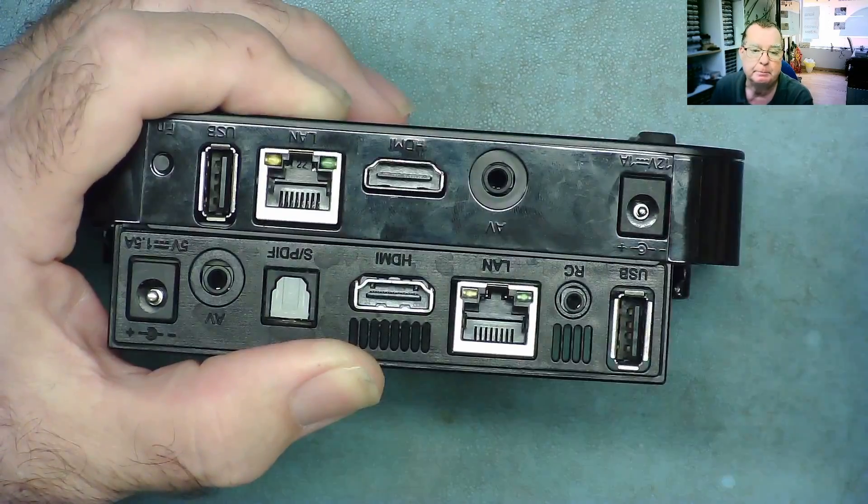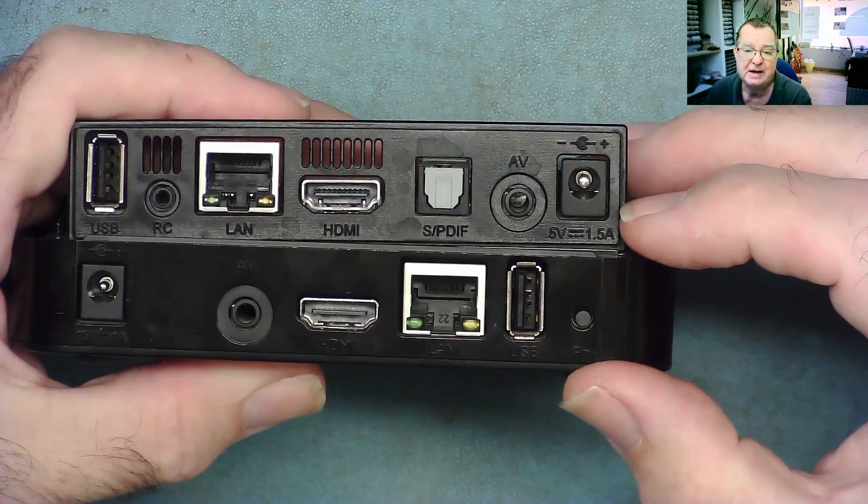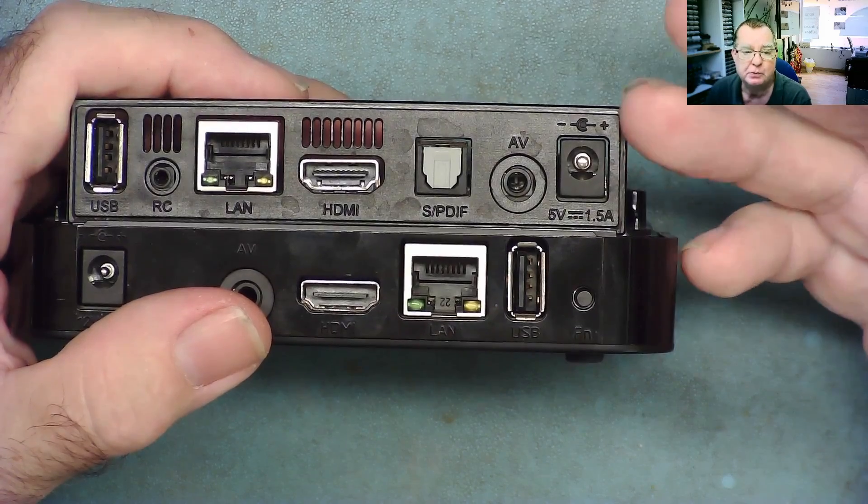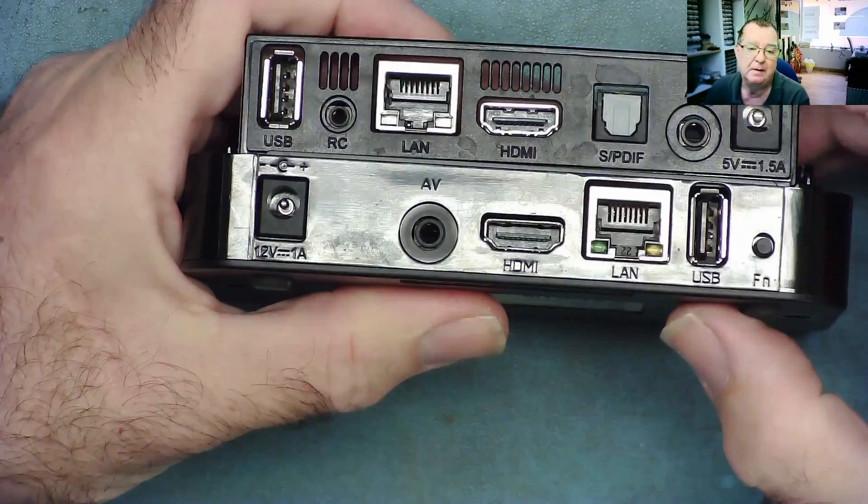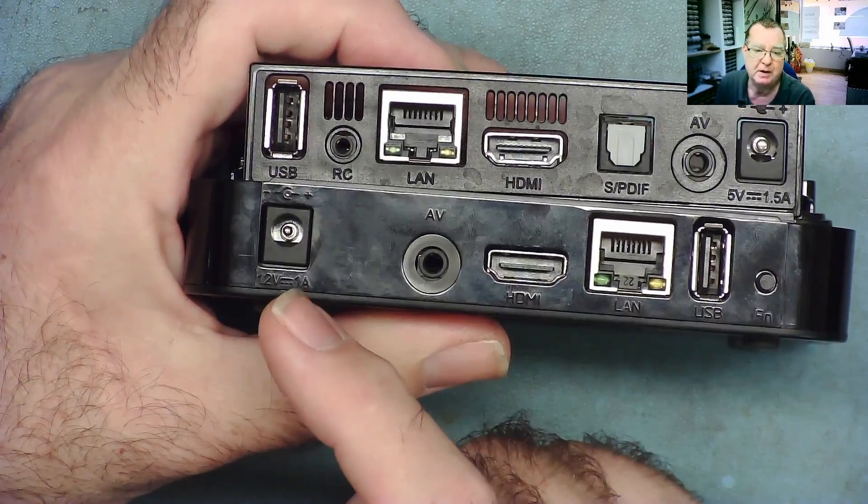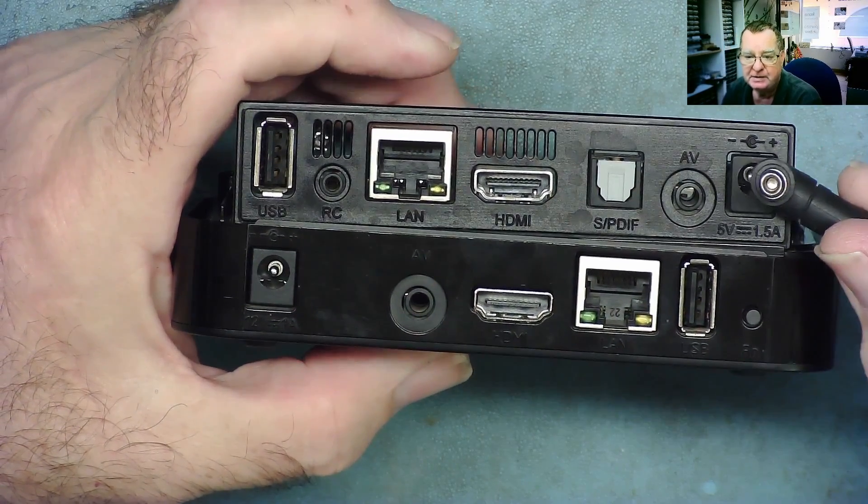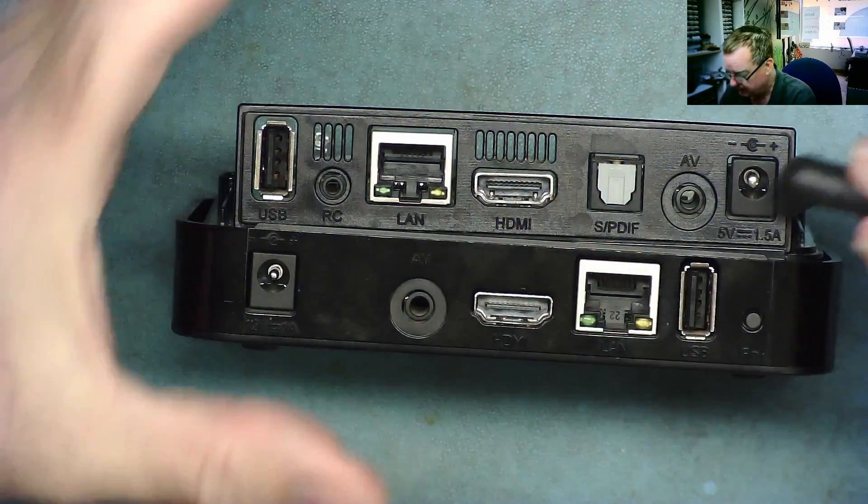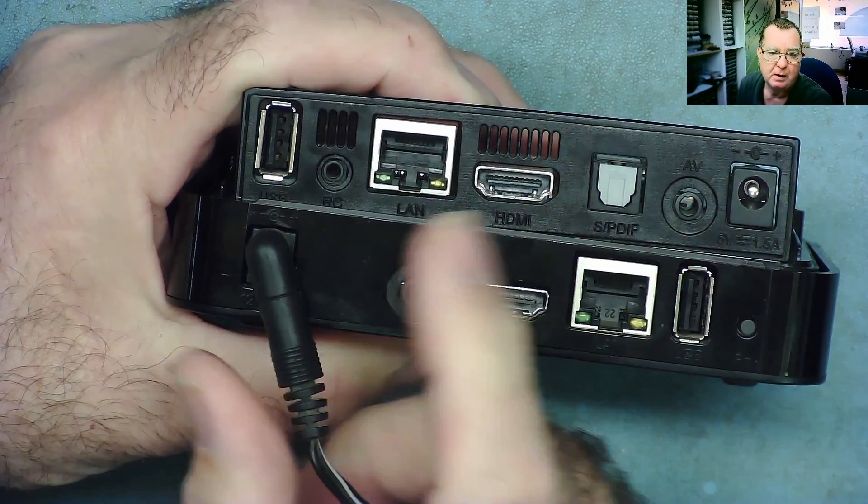It will go in here, and the reason for that is so that you cannot easily accidentally put too much voltage into here. If you put too much voltage in, for example 12 volts instead of 5, you will kill the box. Now what it doesn't stop you doing is applying a 5 volt power supply to this box.